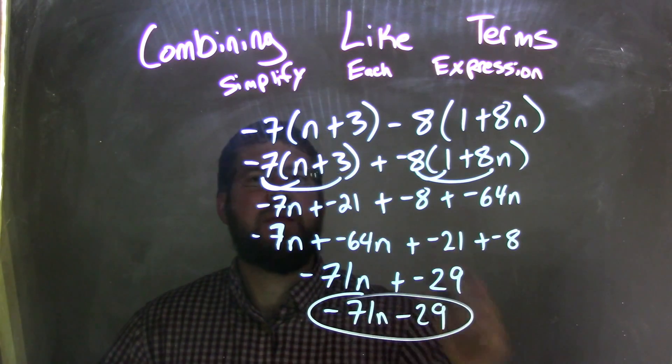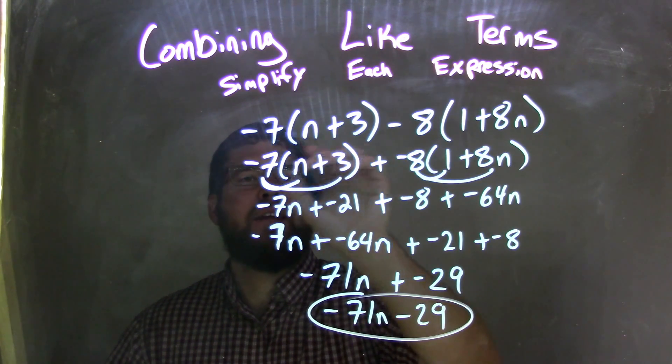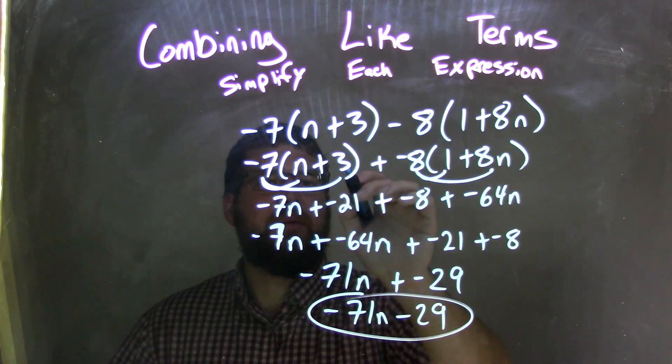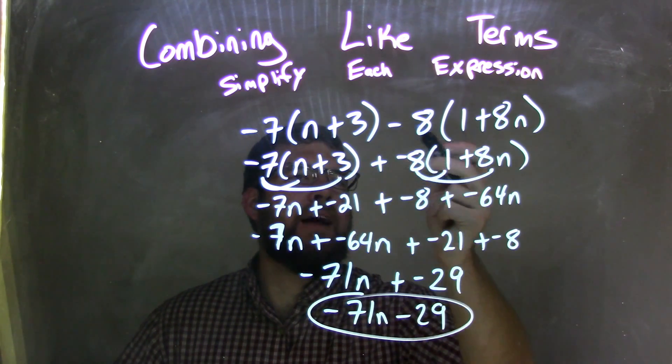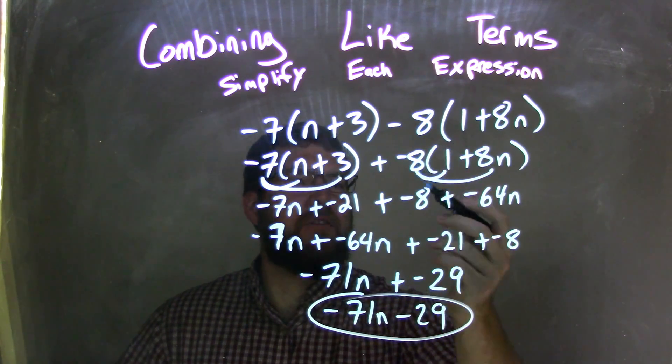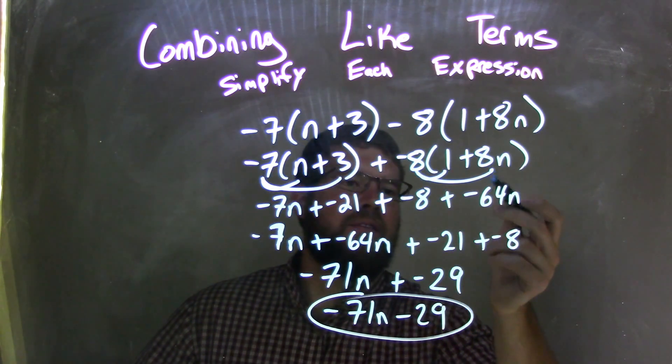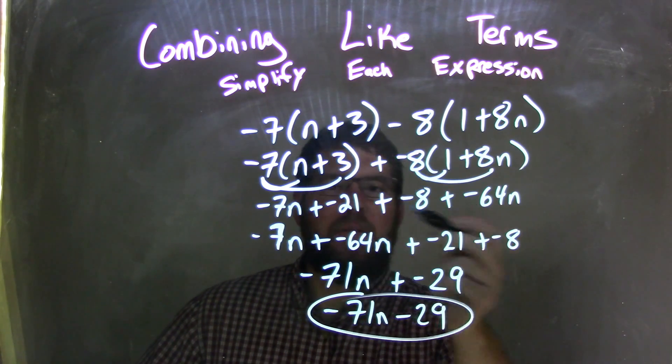Let's recap. Negative 7 distributed to negative 7n and negative 21. The minus 8 I made into plus negative 8, so I distributed that. Negative 8 times 1 is negative 8. Negative 8 times 8n is negative 64n, keeping the plus signs in between.